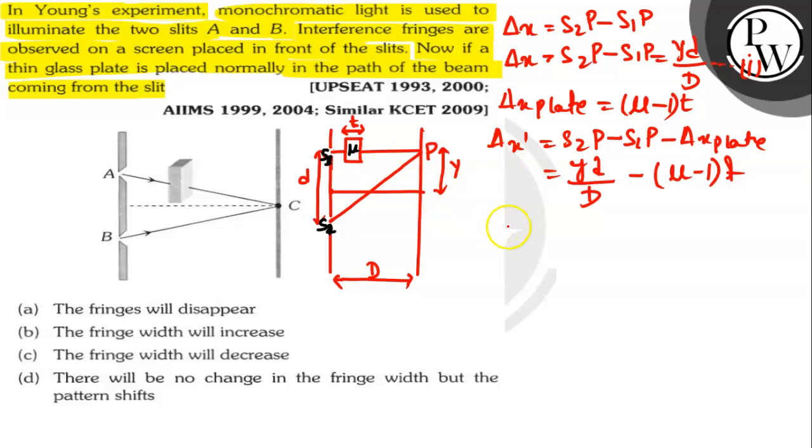we have Del X dash equals N lambda. On putting the values, we get yd by capital D minus mu minus 1 into t equals N lambda.